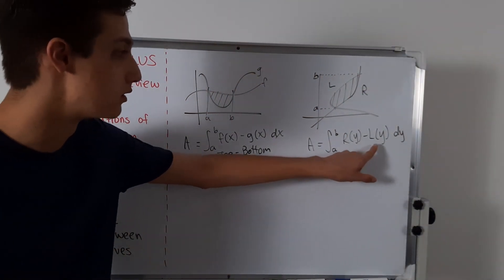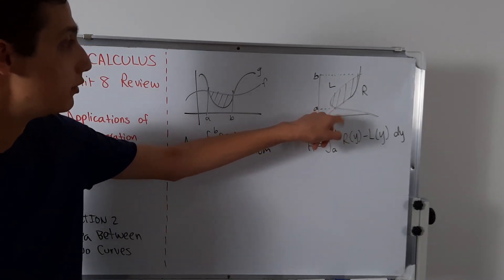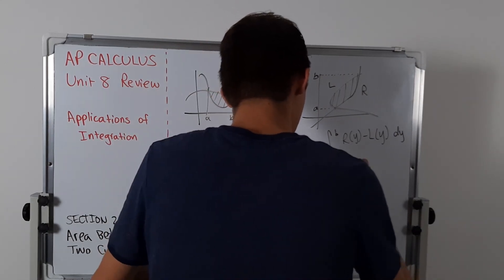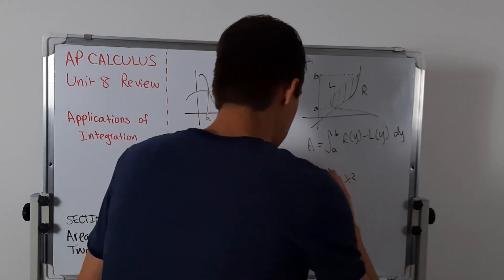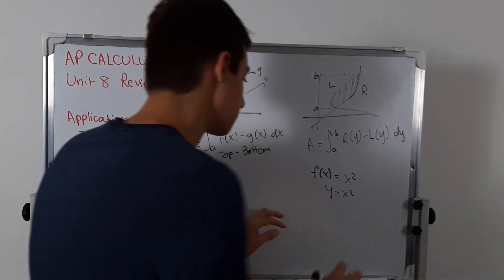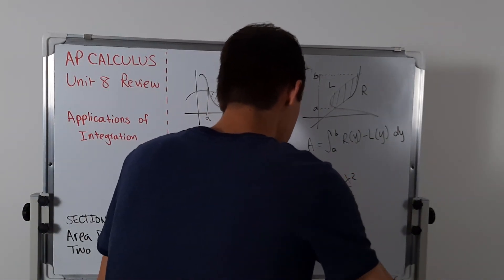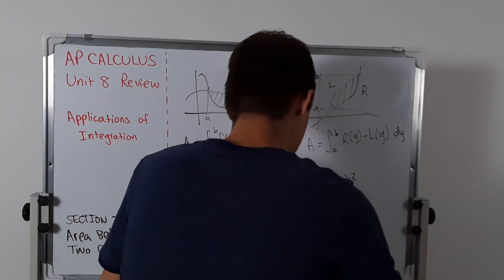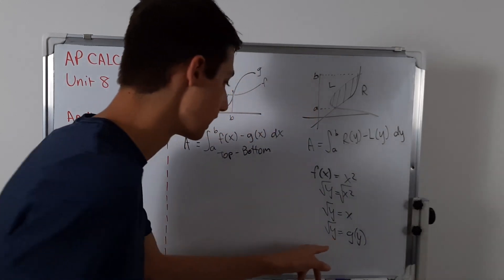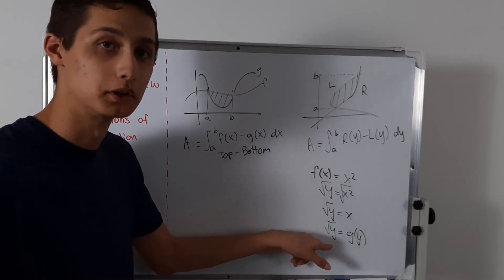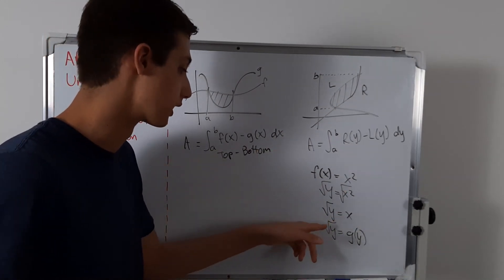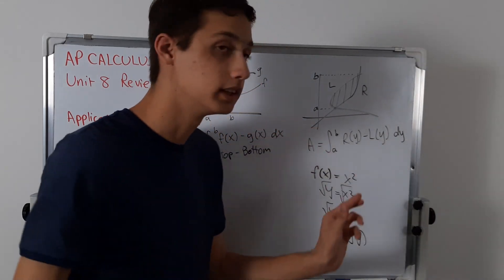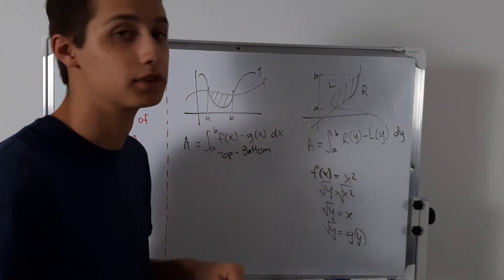You cannot have any x's in here when integrating with respect to y. If f(x) equals x squared — meaning y equals x squared — then you square root both sides to get x equals the square root of y. So you can think of this as g(y) equals the square root of y. That becomes your new function — not x squared, but the square root of y.